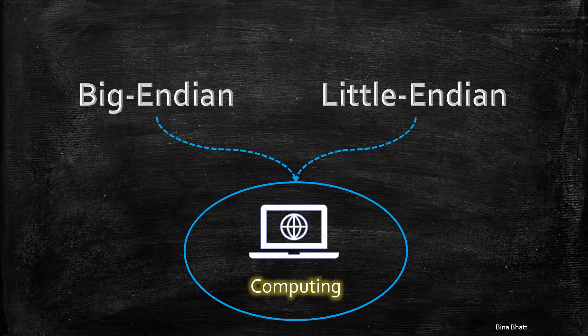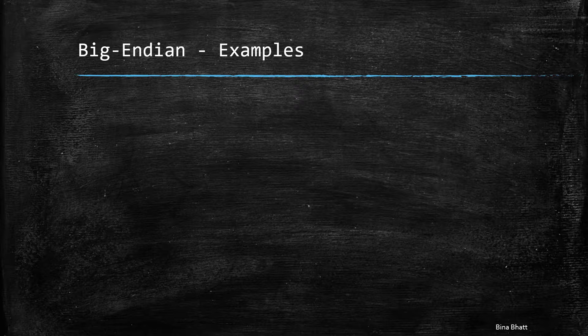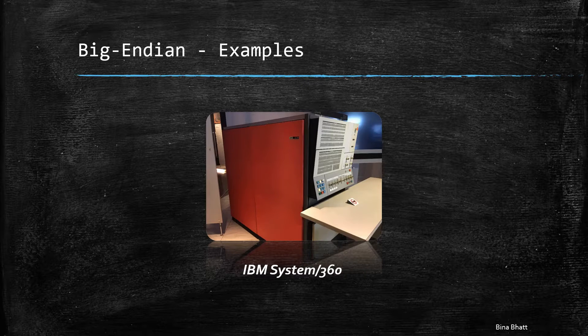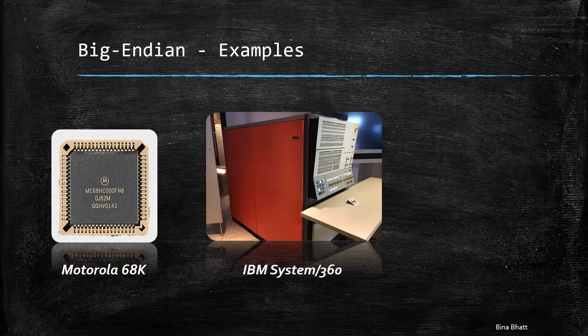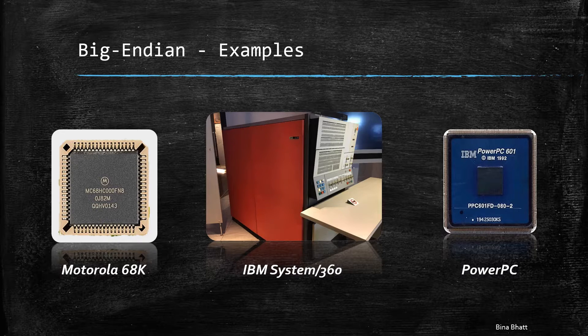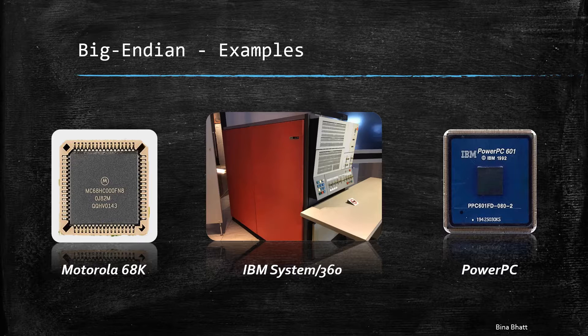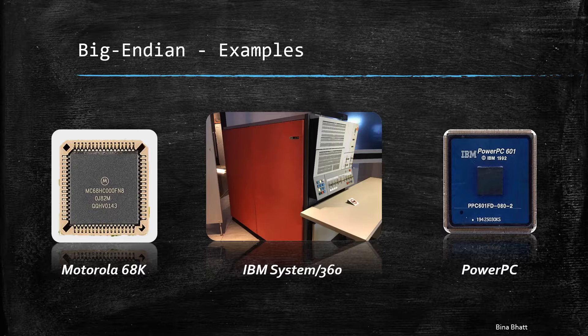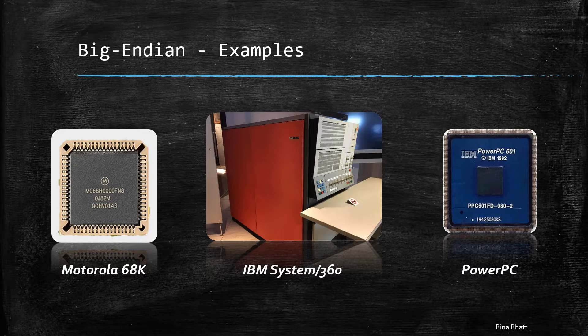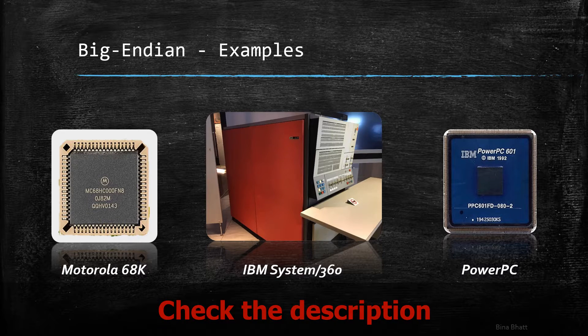And now, let's have a quick look at some of the advantages associated with big endian byte order. Big endian was used in early mainframe computers made by IBM. It is also used in Motorola 68K and in PowerPC and basically most of the RISC processors are big endian. And by the way, I have explained the differences between RISC and CISC processors in a separate video on this channel and the link to that is in the description below.